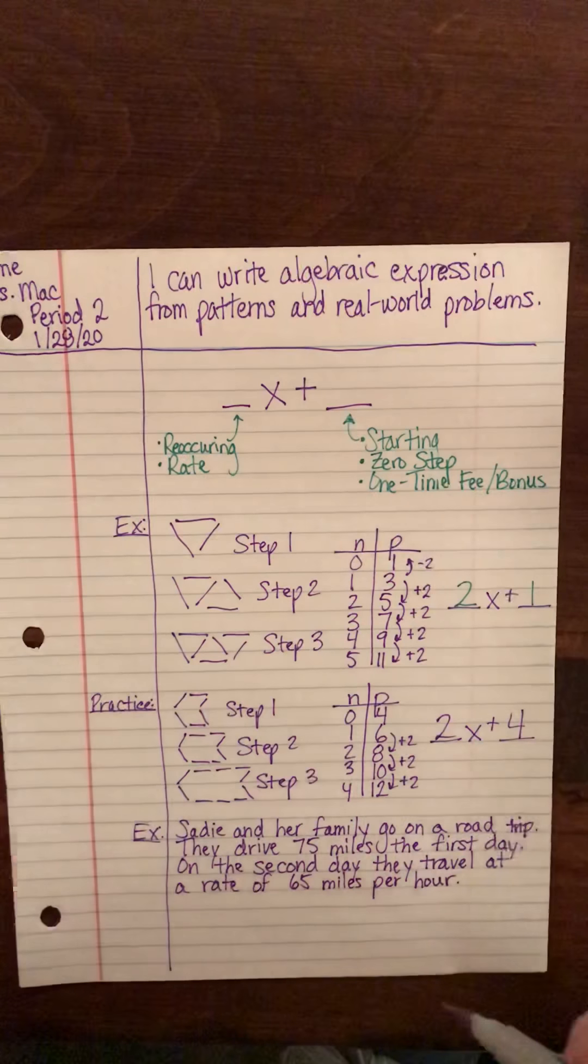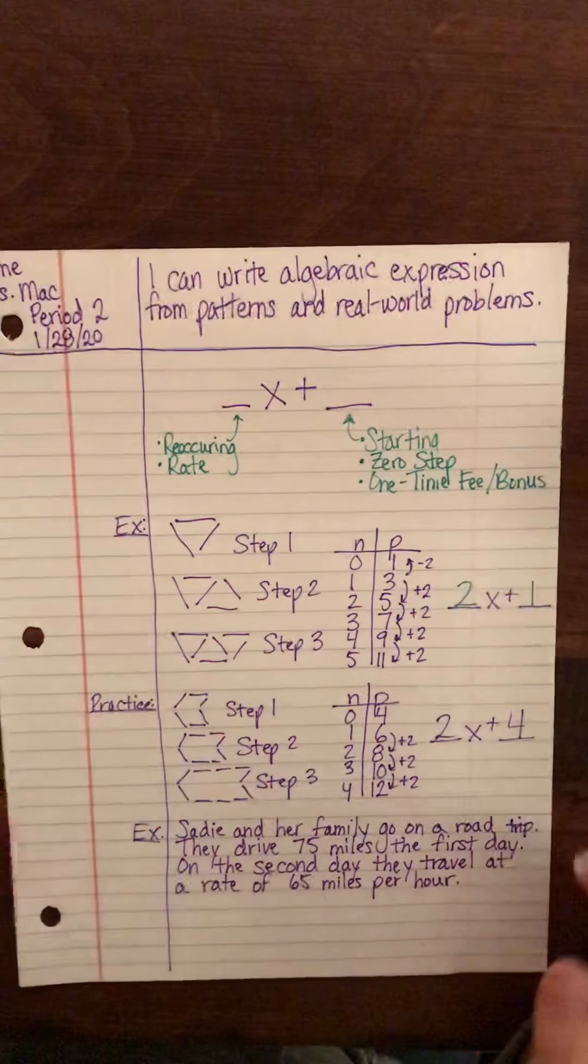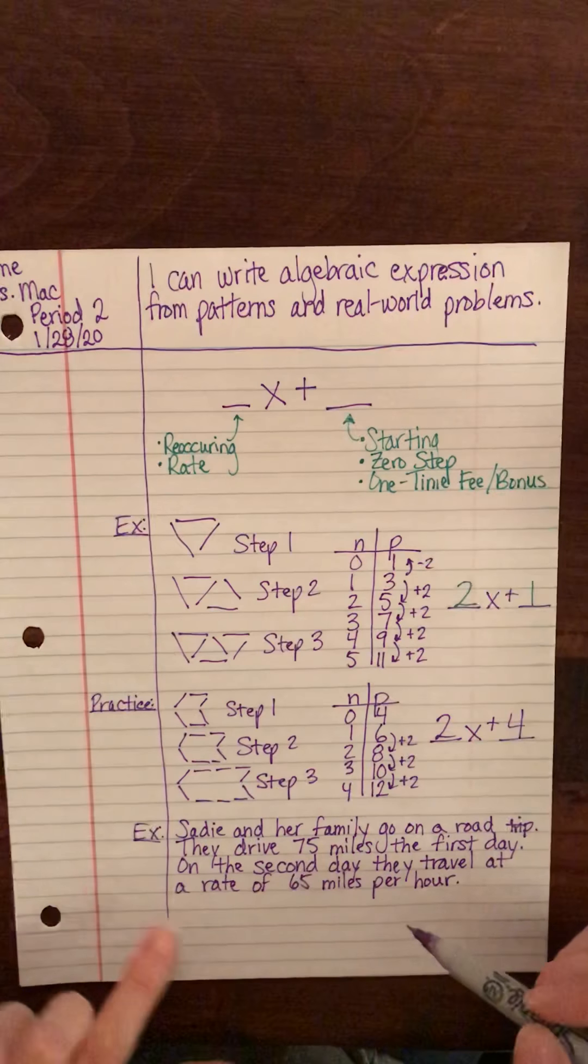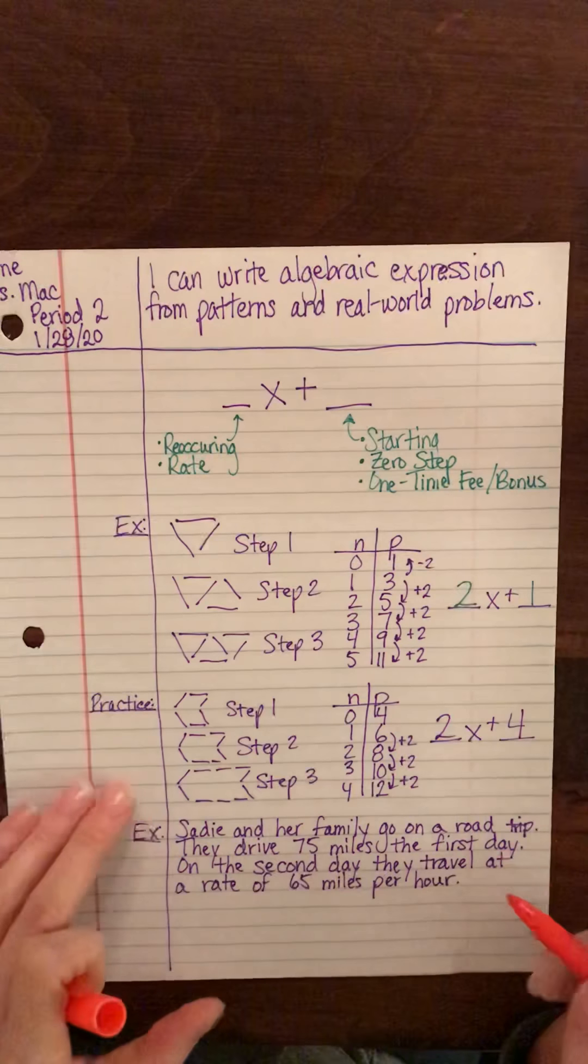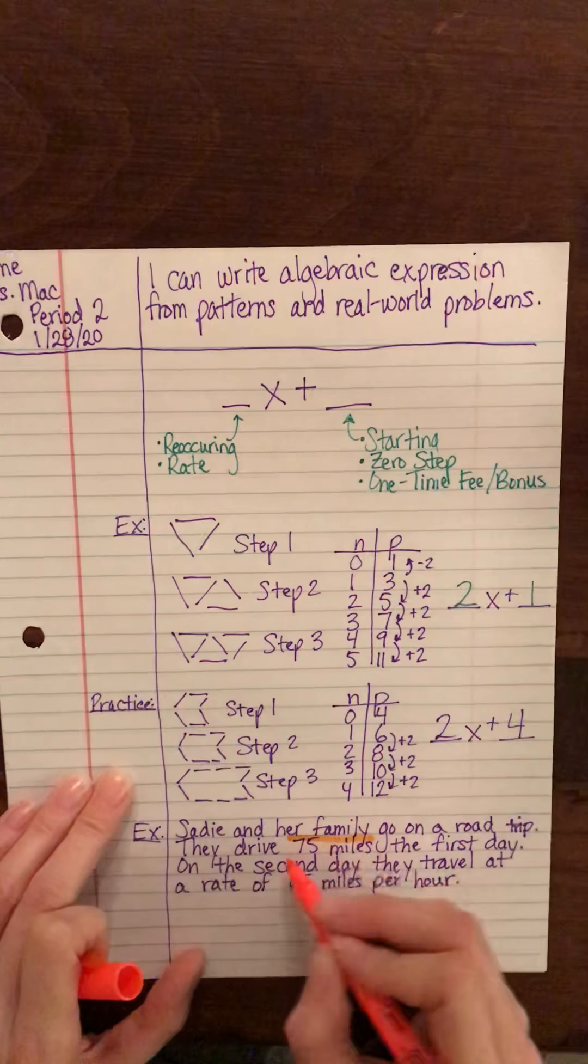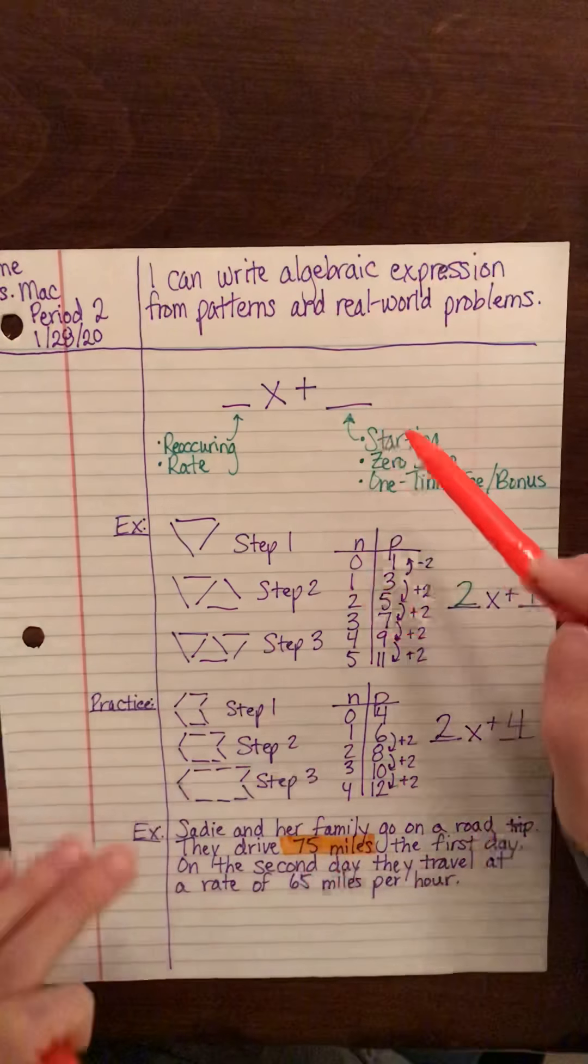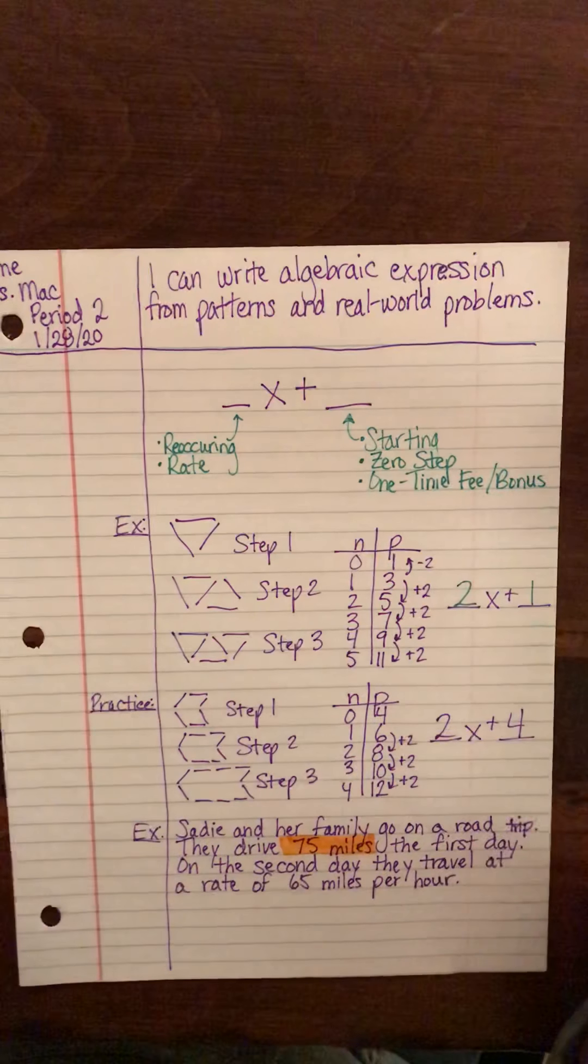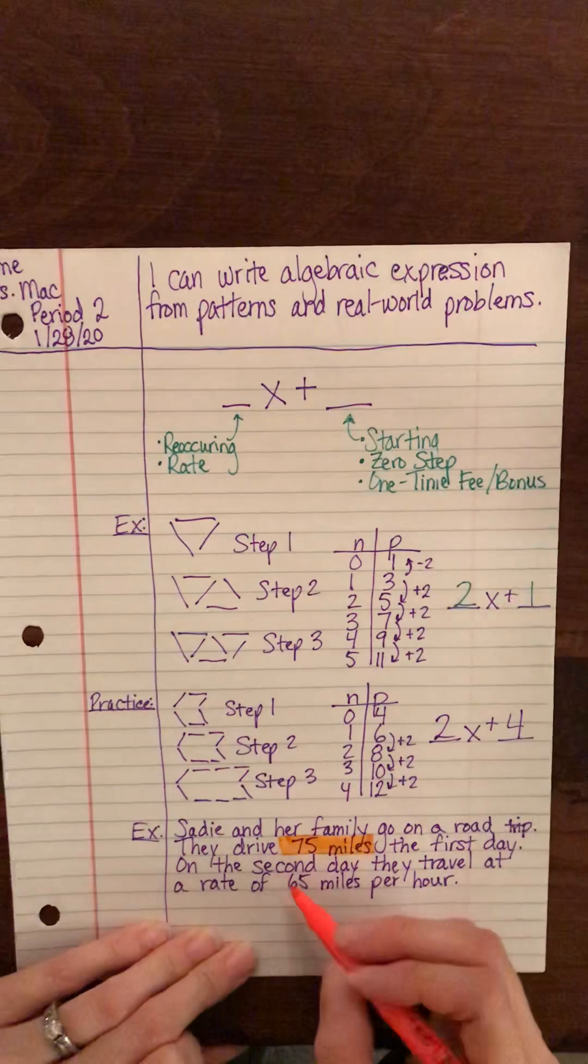Okay, so what we're going to do is write an algebraic expression for this. We're going to start by putting this data in a table, then we'll write the expression, and then we will figure out how long it's going to take them to get home. So let's pull out the important information. We know that they've already driven 75 miles. Now if you look back at the top here, that's what they're starting with—they're starting with 75 miles under their belt. Now the rate that they're traveling is 65 miles per hour. Whenever you see that 'per,' that tells you it's a rate.